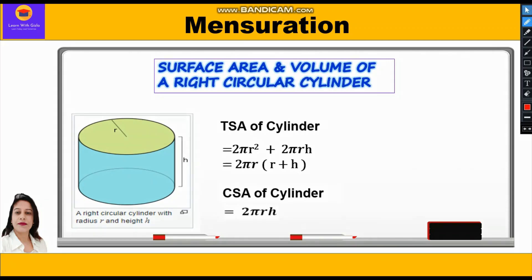The total surface area of a cylinder is the sum of the area of the two circular bases — the top and the bottom — plus the curved surface area. Therefore, we can write 2πr² + 2πrh. Taking 2πr common, we are left with 2πr(r + h).